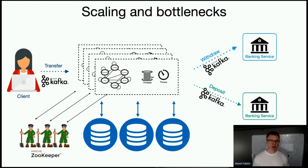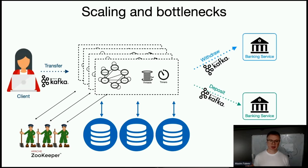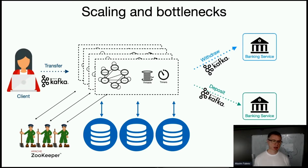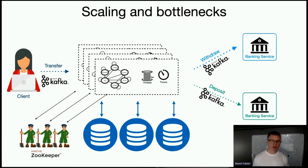All of that complexity is for practically two lines of code: withdraw and deposit. I've seen this architecture repeated in different forms and shapes thousands of times across different companies, from my own experience and from users of our open source and clients of our company. People reinvent this architecture every time for each new application, because they have these low-level components — database, queue, ZooKeeper — and have to implement it all over again.